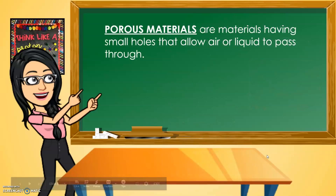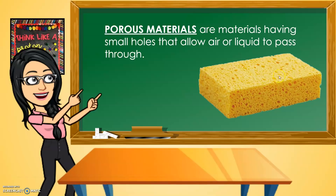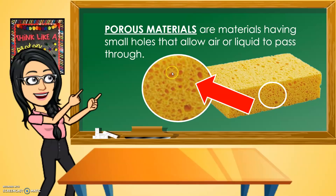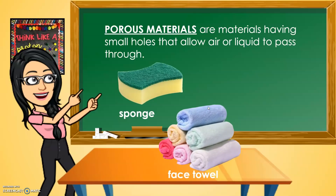Porous materials are materials having small holes that allow air or liquid to pass through. For example, a sponge — as you can see, there are a lot of small holes. Those holes are the reason why air and water can enter. So porous materials are materials that can absorb water. Examples include sponge, towel, tissue, and mop.